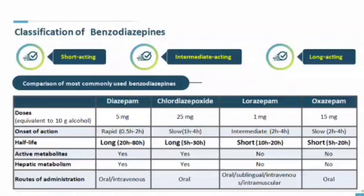Regarding active metabolites, diazepam and chlordiazepoxide produce active metabolites, whereas lorazepam and oxazepam do not produce any pharmacologically active metabolites. Diazepam and chlordiazepoxide are subjected to hepatic metabolism, while lorazepam and oxazepam are not. For routes of administration, diazepam can be given orally and intravenously, chlordiazepoxide orally, lorazepam orally, sublingually, intravenously, and intramuscularly, and oxazepam only orally.